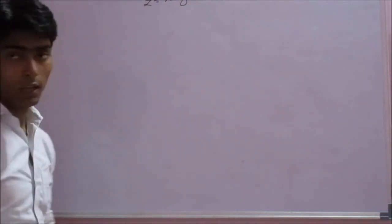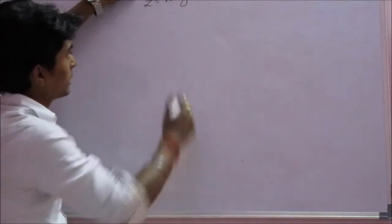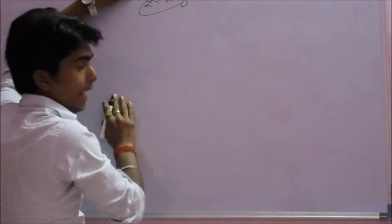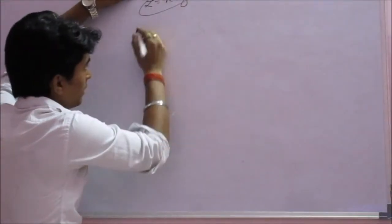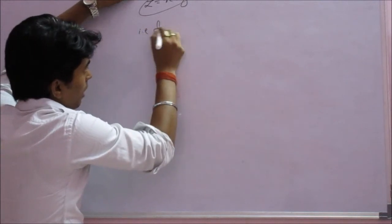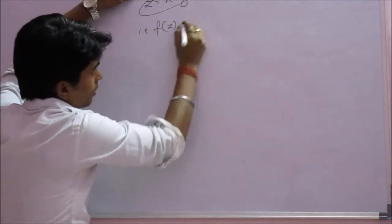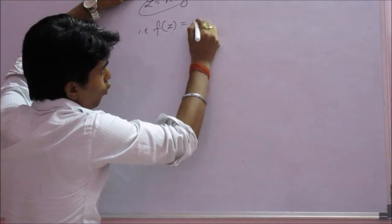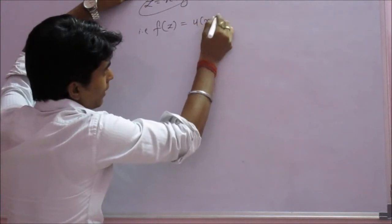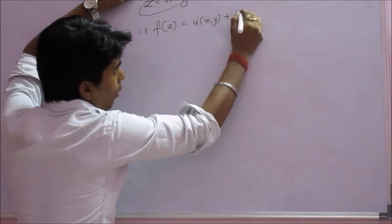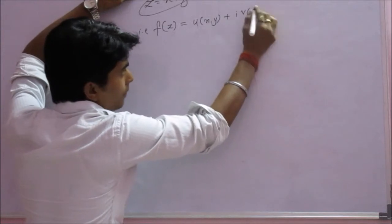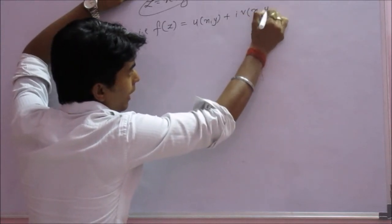If we suppose that this equation is a variable and we make a function of this variable, that is f(z) will be equal to u(x,y) plus i into v(x,y).